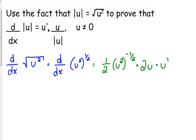Let's simplify things a little bit. The one-half of the two cancel. We have u times u prime on top over the square root of u squared, which in the very beginning we defined the square root of u squared as the absolute value of u, so then we can substitute that in here at the end. And there is the derivative rule for the absolute value function.